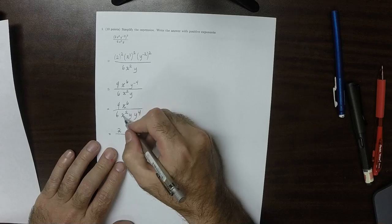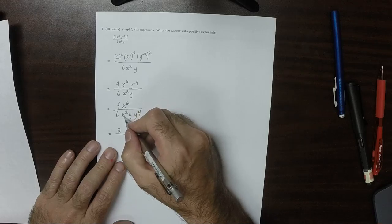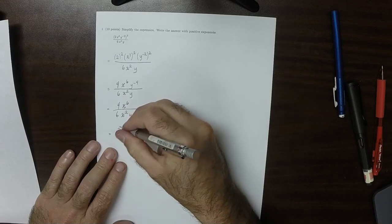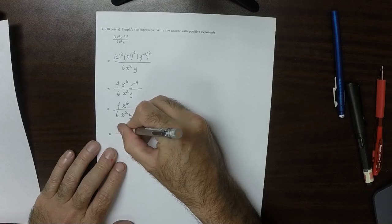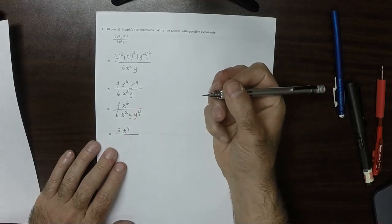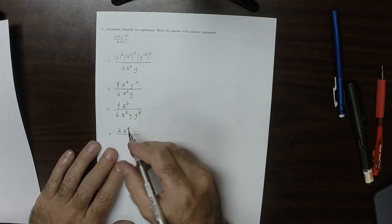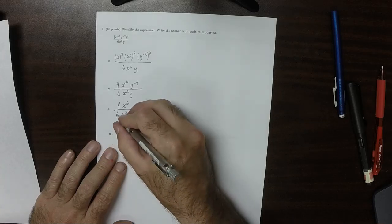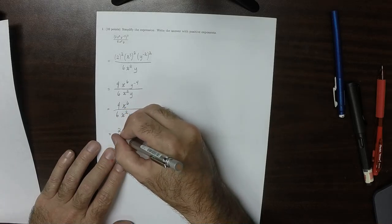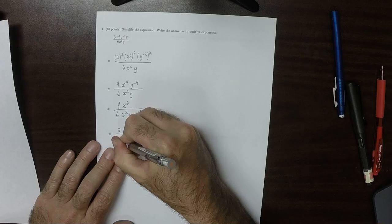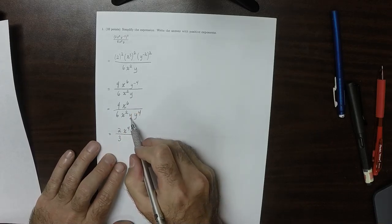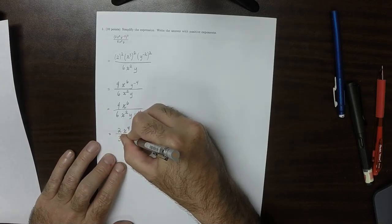x to 6 over x squared. Well, we have the same bases, so we'll subtract the exponents. So that would be 4 in the numerator. So x to 4. And then down here, from canceling with that 4, there's a 3. And then y times y to 4 is y to 5.